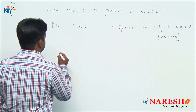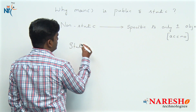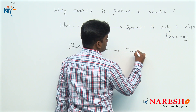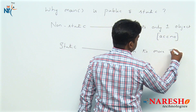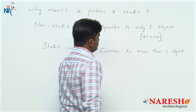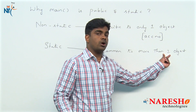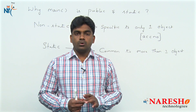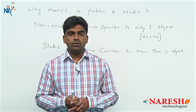Now coming to static — whenever we represent static, it means it is common to more than one object. But when something is common to more than one object, the number is not clear. Tell me exactly how many objects it belongs to — it belongs to how many?